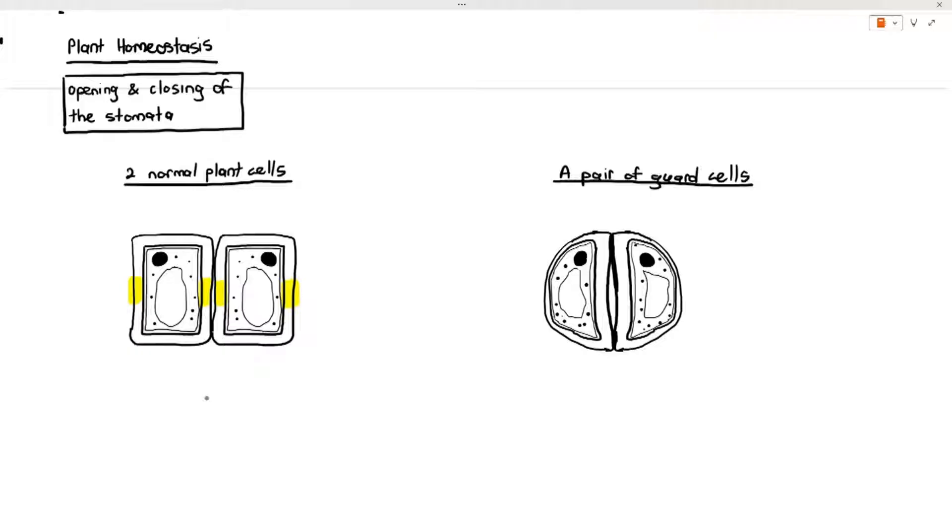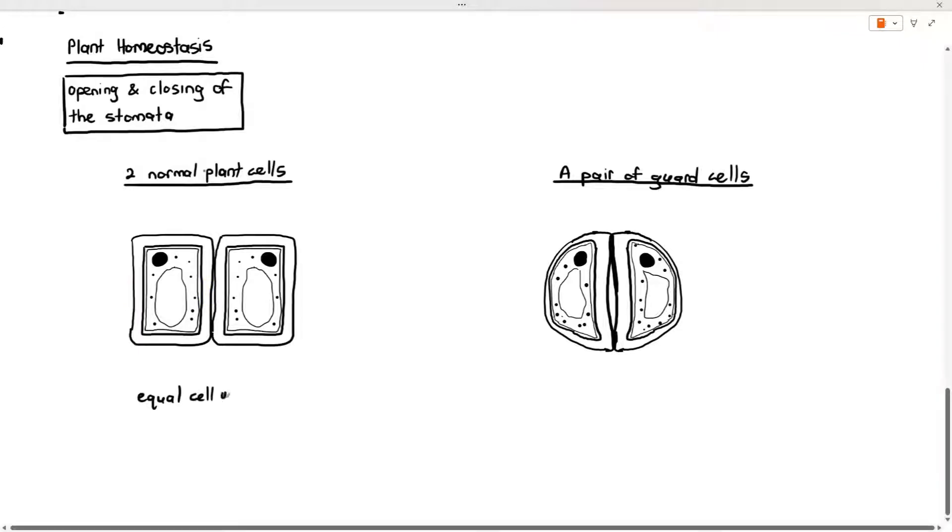If you notice the parts where I'm highlighting in yellow for the normal plant cells, I just want you to see the thickness of the cell wall. What do you notice about the thickness of the cell walls over there? The thickness of the cell walls in those areas are quite equal, so they look quite almost the same thickness no matter which part I highlighted.